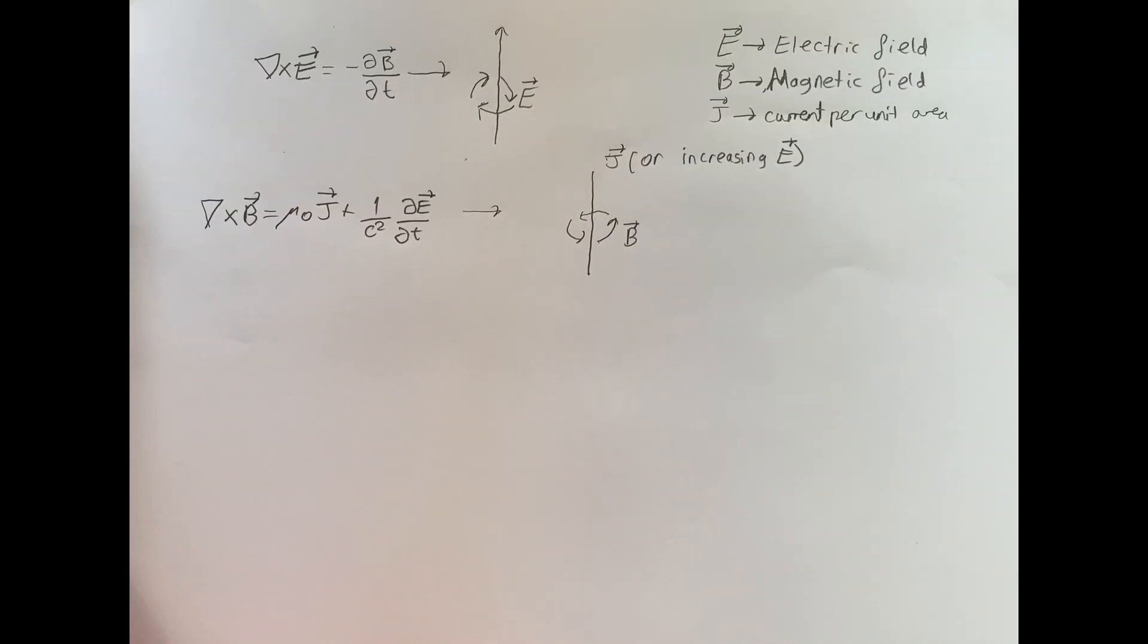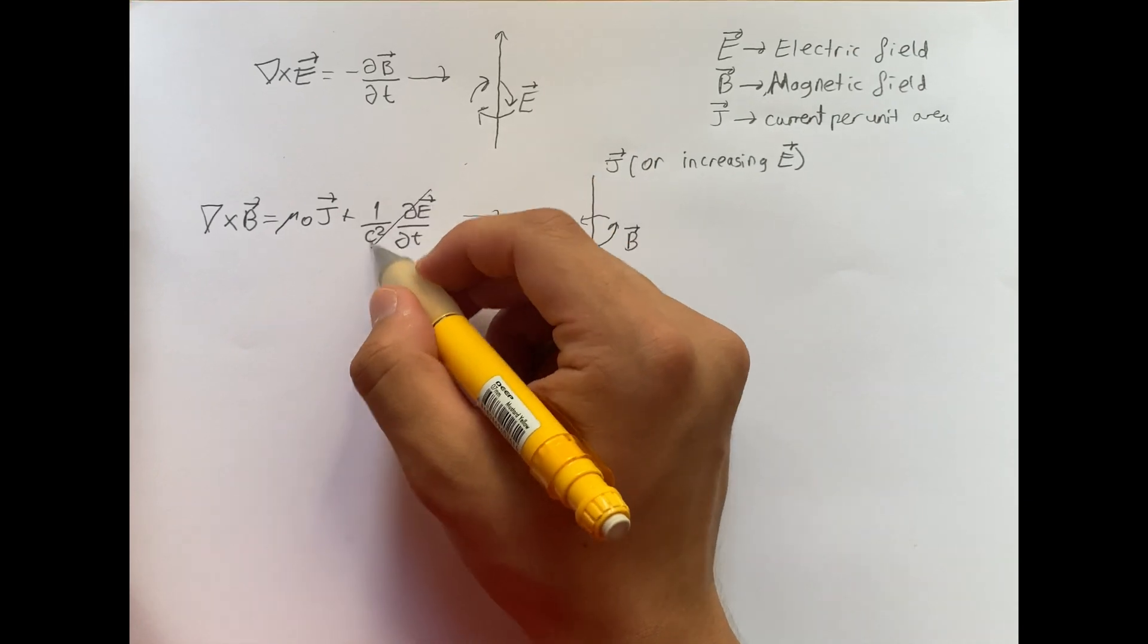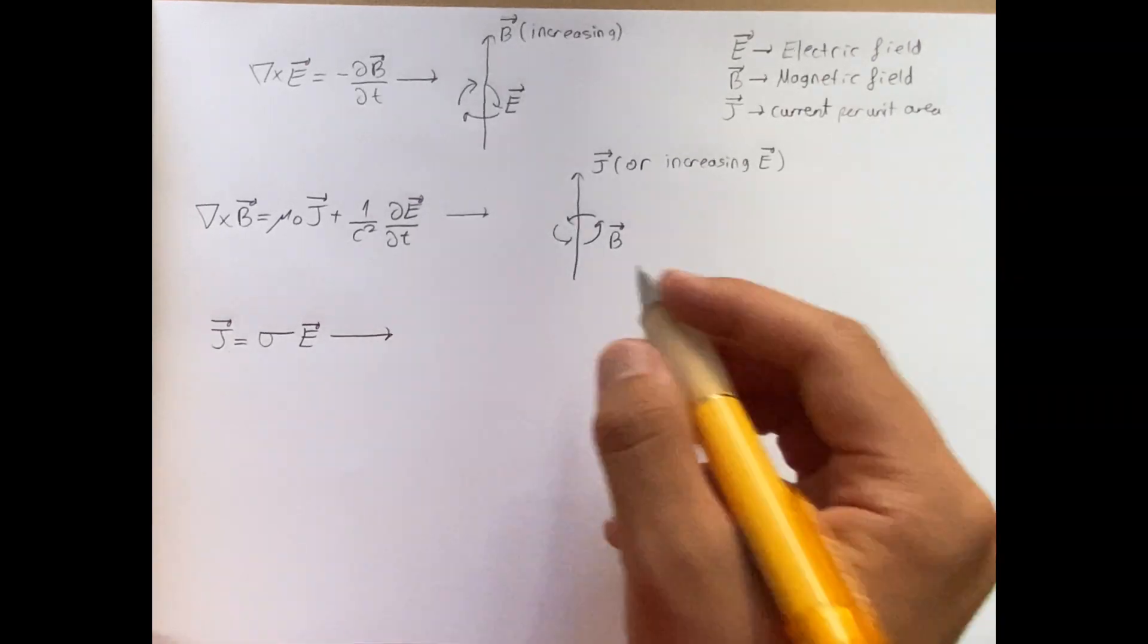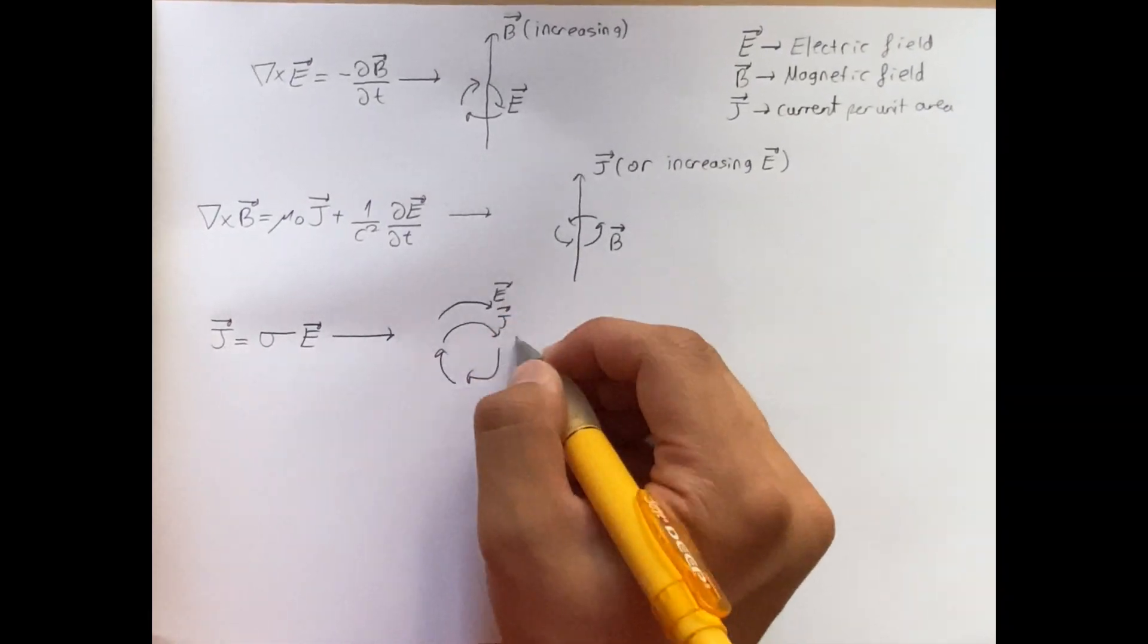For a low frequency AC current, we can ignore the changing electric field as its contribution is really small. The third equation applies to good conductors and means that electrons move in the direction of the electric field.